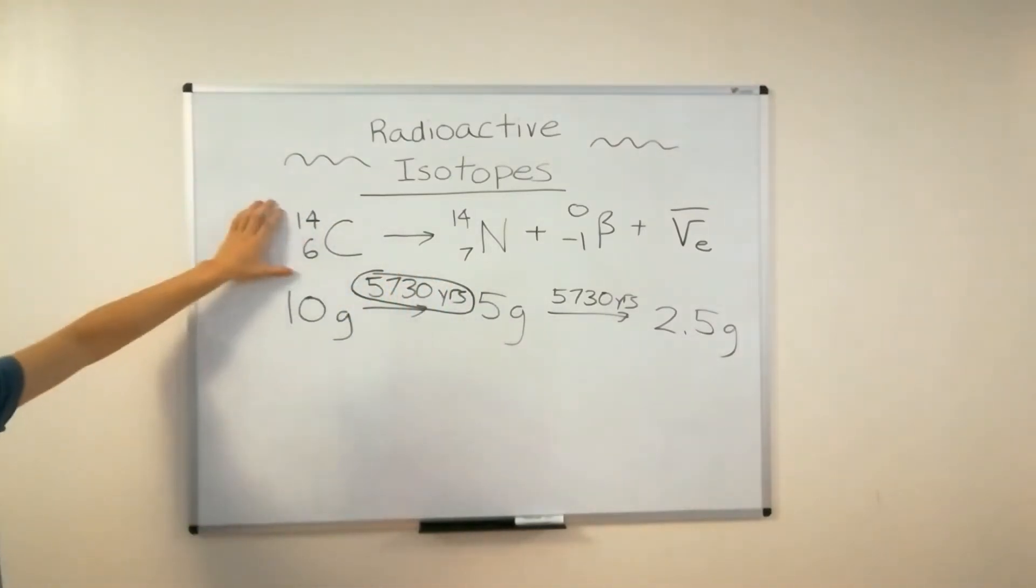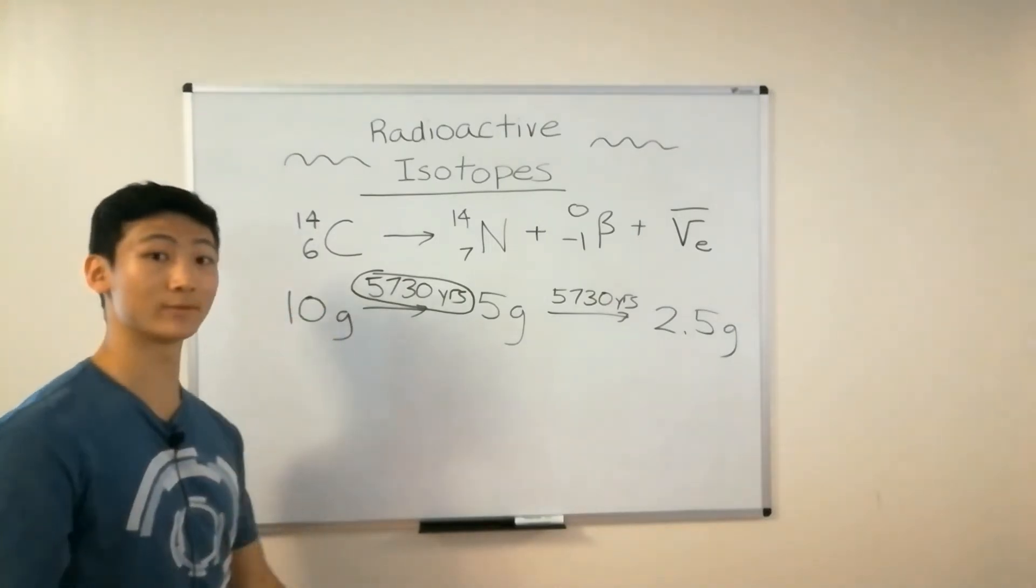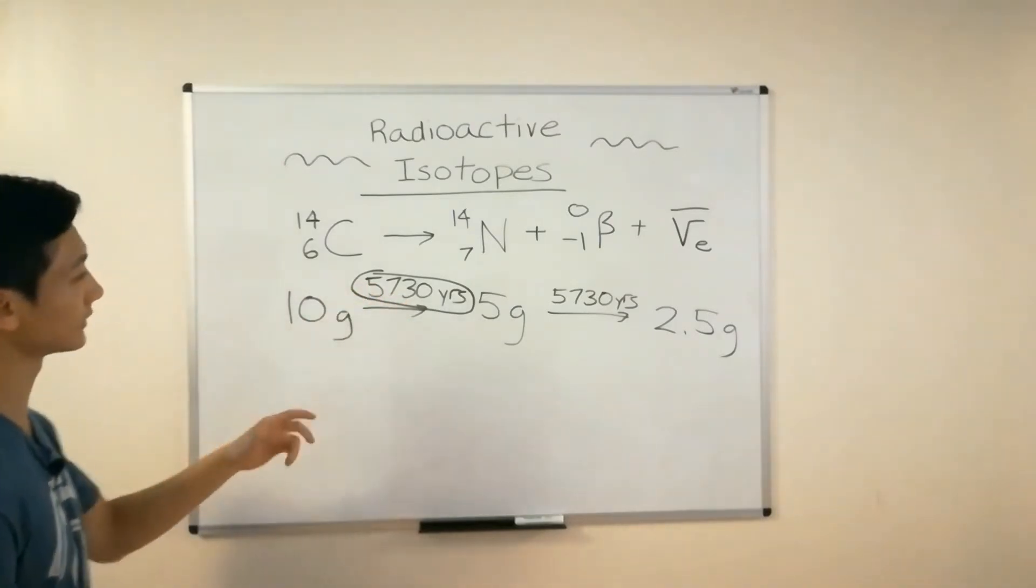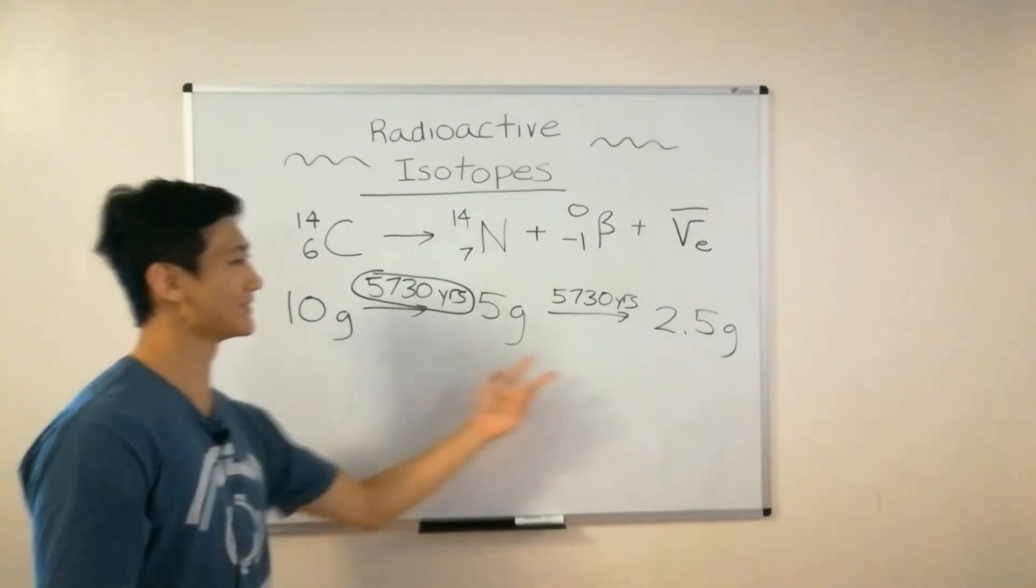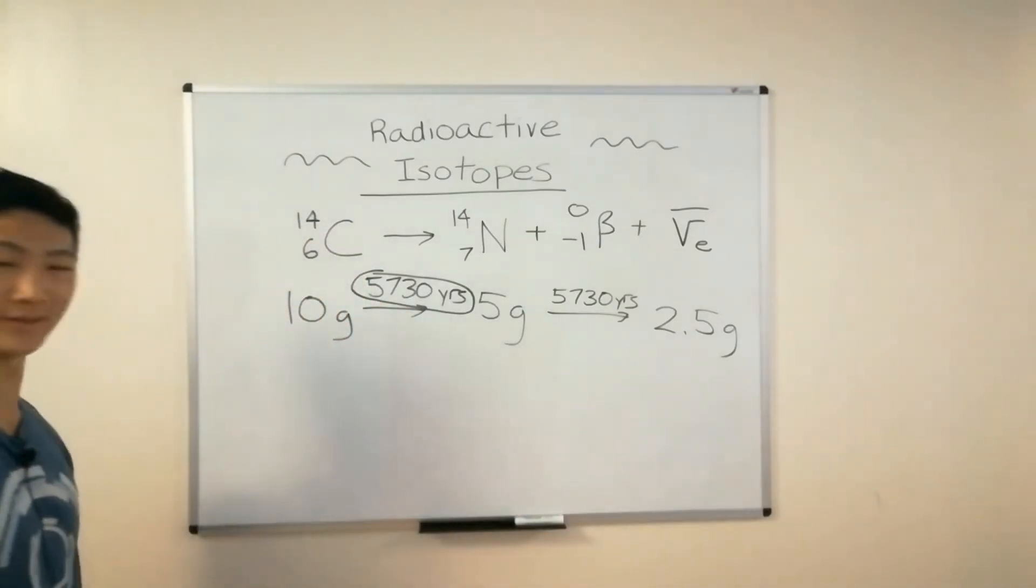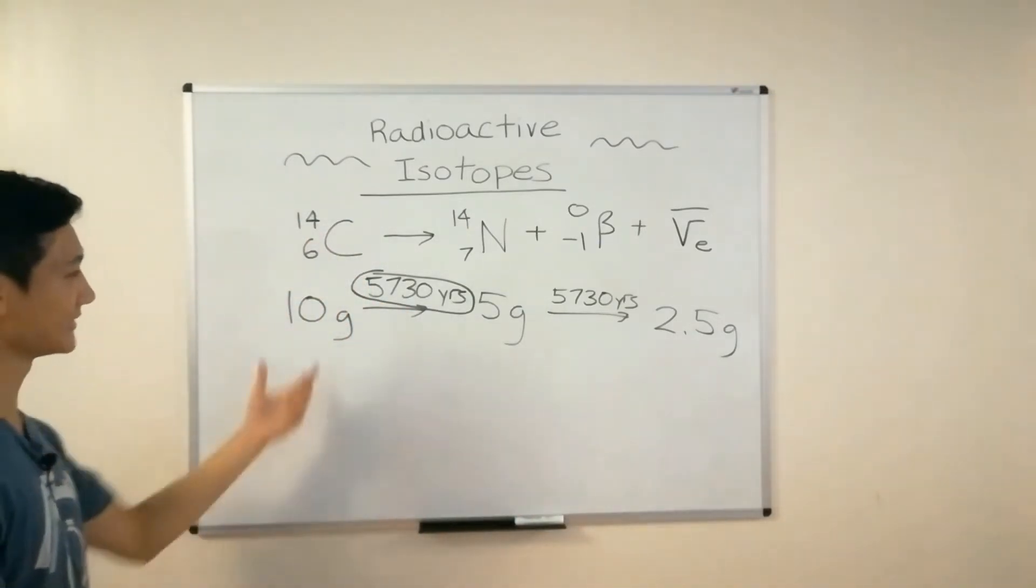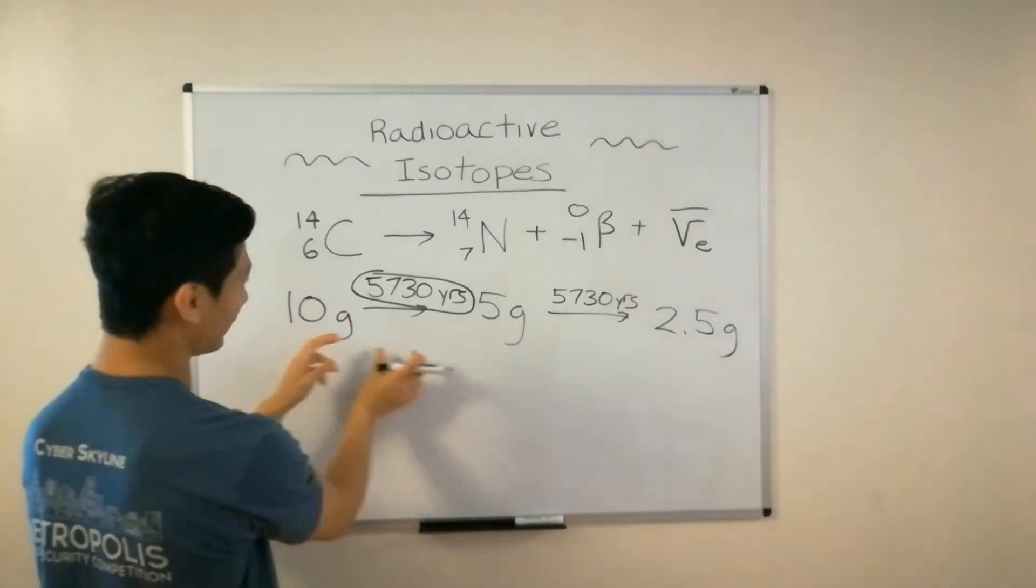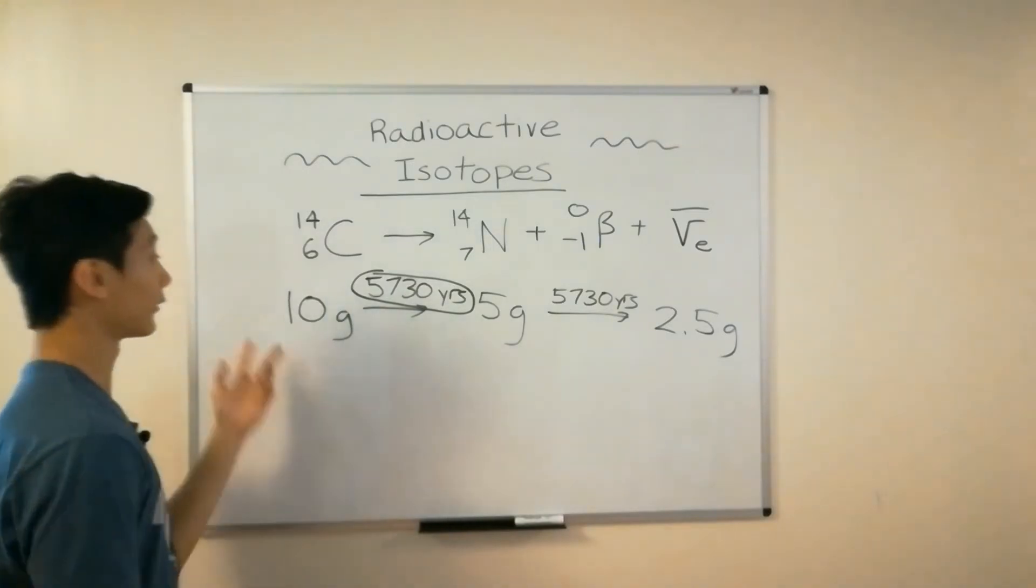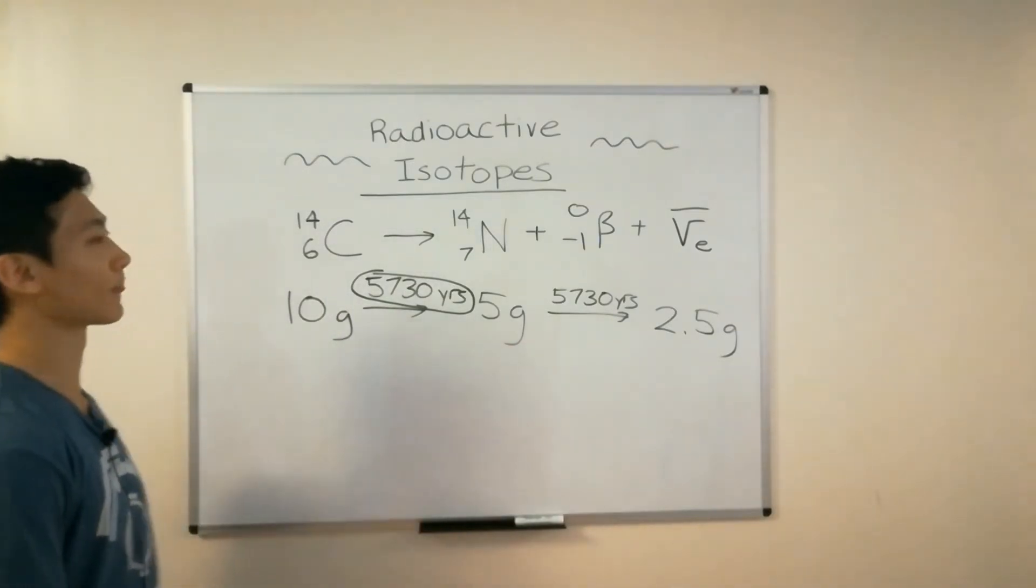That is the half-life of carbon-14. Now, different radioactive isotopes have different half-lives, so this is a characteristic number for carbon-14. It's almost as if Thanos snaps its hands every 5,730 years. So that's the half-life. It's how long it takes for a radioactive isotope to decay into one half, or half of the sample to decay.